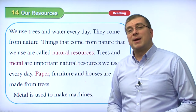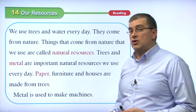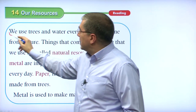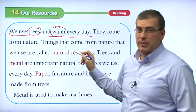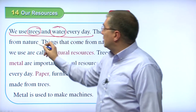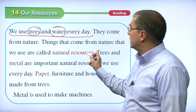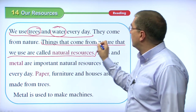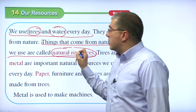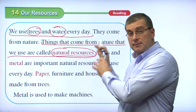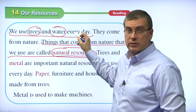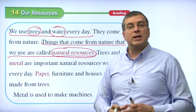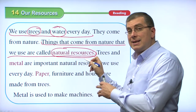Welcome back everybody. Let's go over the reading passage together. This is an interesting organization — instead of starting with the main idea, we start with an example. We use trees and water every day. They come from nature. Things that come from nature that we use are called natural resources. Finally, in the third sentence, we find our main idea: things that come from nature that we use are called natural resources. This passage is about natural resources. Sometimes reading passages start with an example and build up to the main idea.